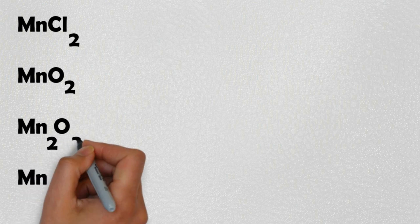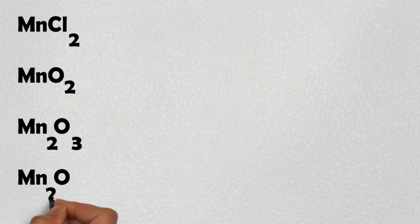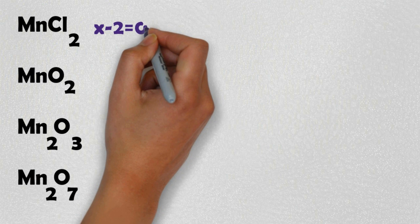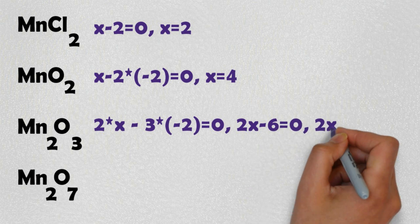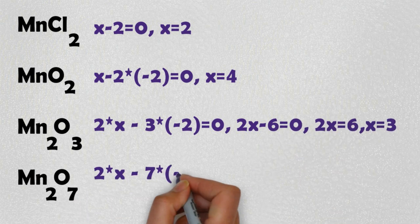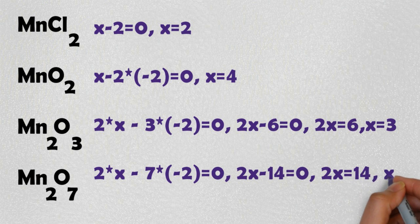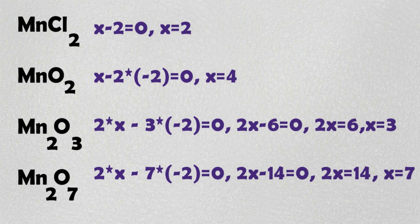For MnCl2, the oxidation number of chlorine is minus 1. The oxidation number of Mn here equals 2. For N2O3, the oxidation number equals 3. We can also find values of 4 and 7. That means D-Block elements show variable oxidation states.